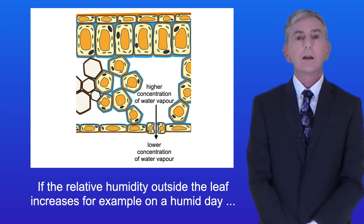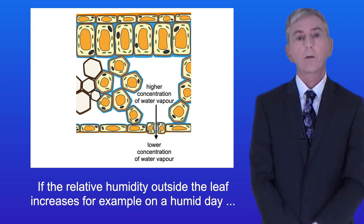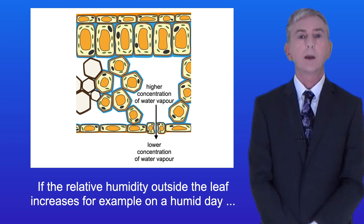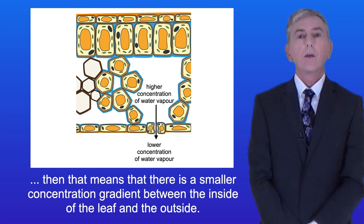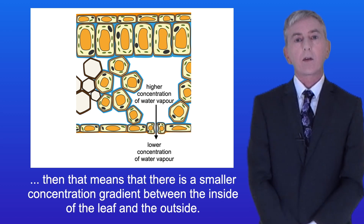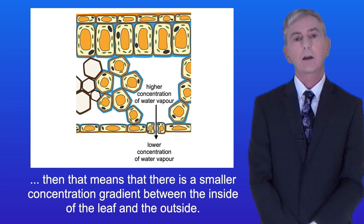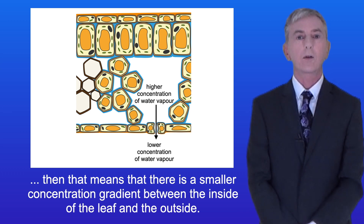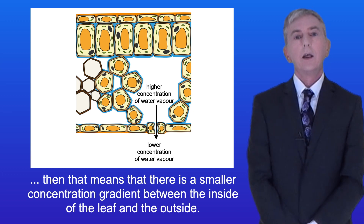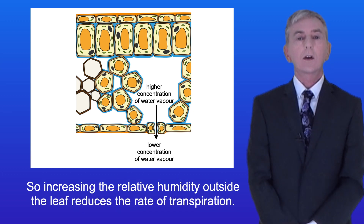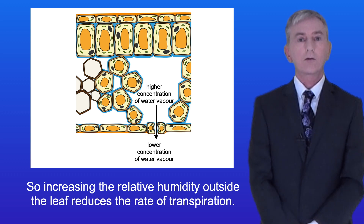If the relative humidity outside the leaf increases, for example on a humid day, then there's a smaller concentration gradient between the inside of the leaf and the outside. So increasing the relative humidity outside the leaf reduces the rate of transpiration.